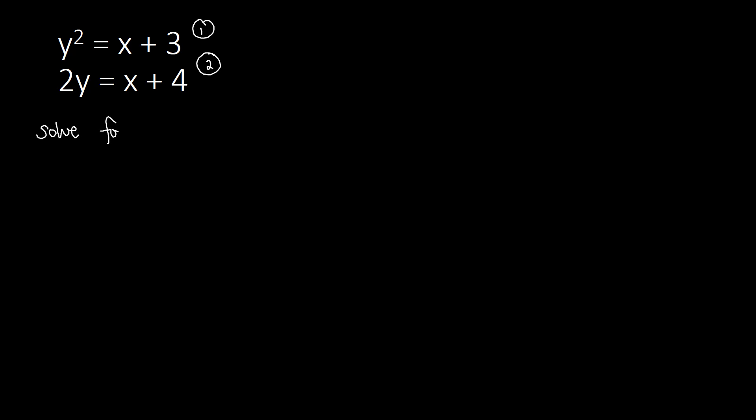Solve for x using equation 2. So for equation 2 here, we have 2y equal to x plus 4. So when we solve for x, we are to isolate x on one side. So let's say I'm going to move 4 to the other side so that I will be leaving the x here on its own on this side. So I'll be subtracting this by 4 and so with the other side.